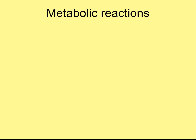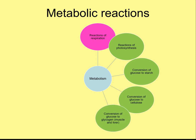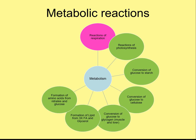Let's look at some metabolic reactions. I've colour-coded these so you can distinguish between catabolic and anabolic reactions. In metabolism we've got respiration obviously, photosynthesis, conversion of glucose into starch in plants, conversion of glucose into cellulose for cell walls in plants, conversion of glucose into glycogen in the muscle and in the liver — remember glycogen is like starch, it's an energy storage molecule but you find it in animals. Formation of lipids from three fatty acids and glycerol. Formation of amino acids using nitrates from the soil in plants.